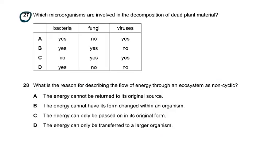Question 27 asks which microorganism is involved in the decomposition of dead plant material. The options are bacteria, fungi, and viruses. Viruses have no role to play in decomposition — we only talk of bacteria and fungi. So the answer is B.